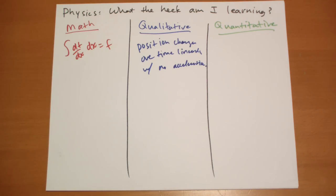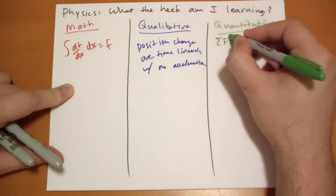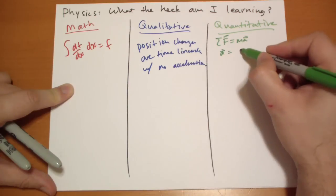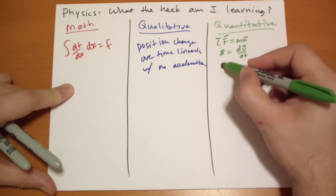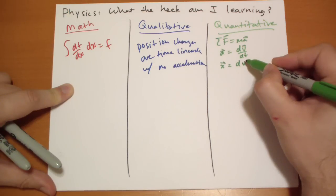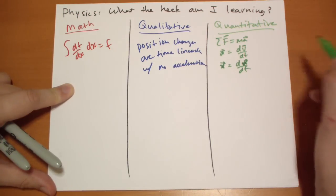And the quantitative aspect is that you have these series of formulas. And then you might have that the acceleration is equal to the derivative of the velocity, and the position is equal to the derivative of the... no, velocity is equal to the derivative of the position. Right?